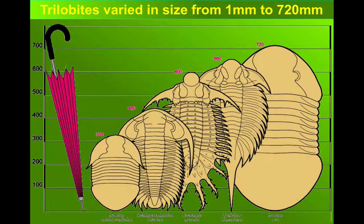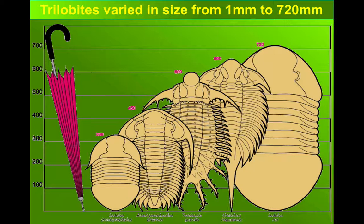There is a huge range of sizes. We see trilobites in this diagram at 72 centimetres long, while others could be measured only in millimetres.